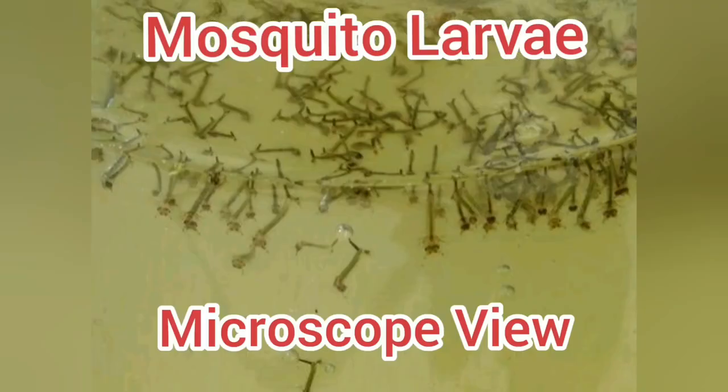There is another microscopic organism found in stagnant water — any guesses? You guessed it right: mosquito larvae!